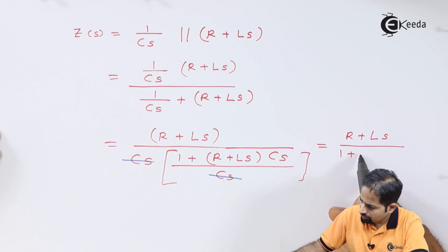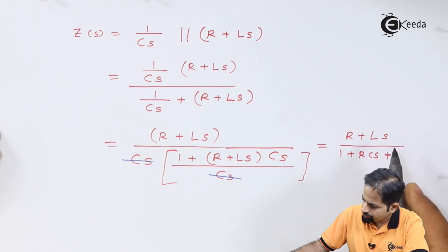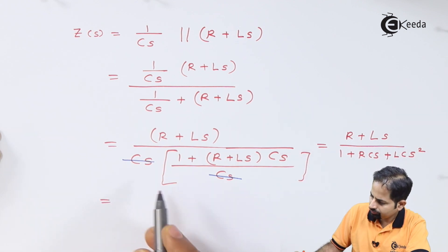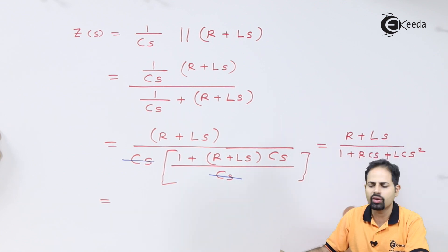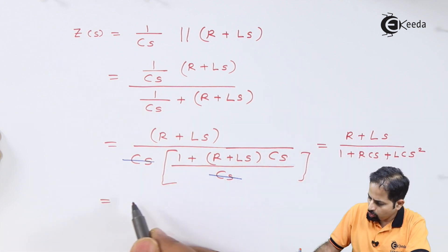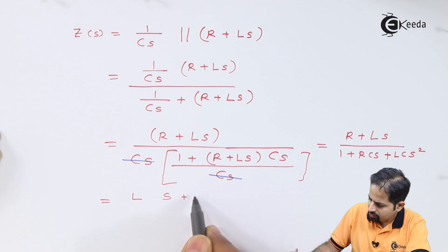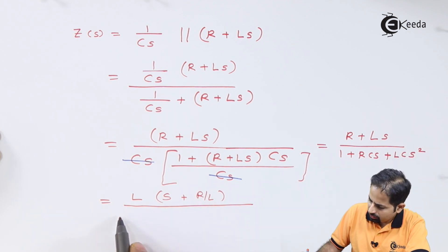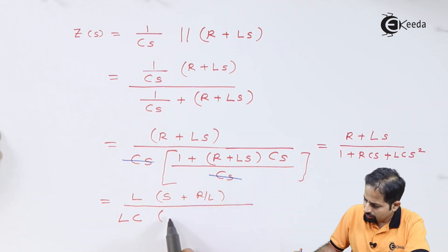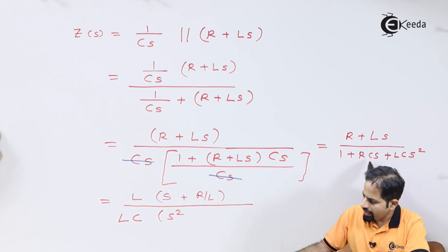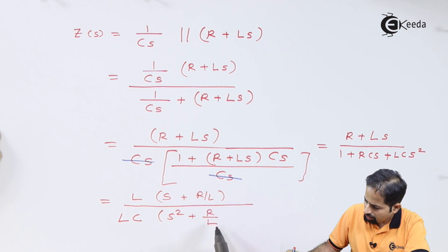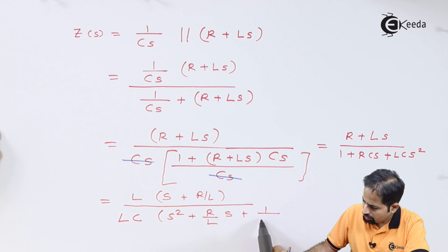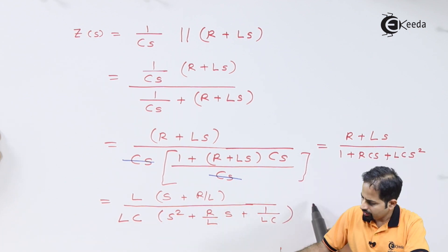Divided by this whole will open the bracket LC into s square. Now we'll rearrange it. We can take this L common. So from numerator if I take L common in bracket it will be s plus R by L. And here you can take LC common so that this coefficient of s square will become 1. So s square divided by LC, here it is going to be R by L into s, and this L and L will get cancelled. So final answer should be R plus Ls divided by 1 plus RCs plus LCs.